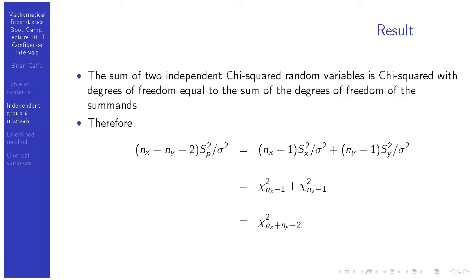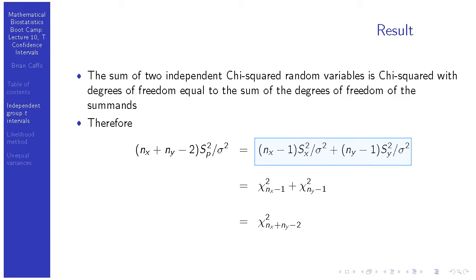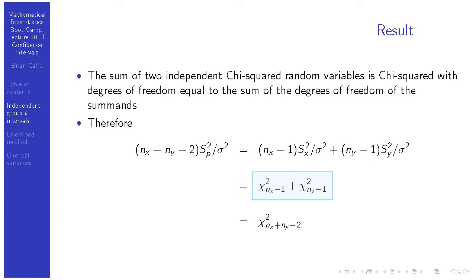Take (nx + ny minus 2) times the pooled variance divided by sigma-squared. That works out to be (nx minus 1) times the x-group variance divided by sigma-squared, plus (ny minus 1) times the y-group variance divided by sigma-squared. The first term is chi-squared with nx minus 1 degrees of freedom; the second is chi-squared with ny minus 1 degrees of freedom. Adding them gives a chi-squared with nx plus ny minus 2 degrees of freedom, since the two groups are independent.